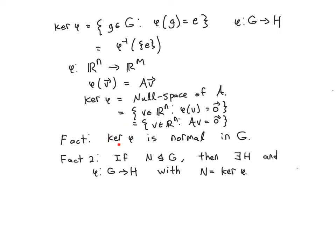Kernels of homomorphisms are normal subgroups, and they're generalizations of null spaces of matrices. A natural question to ask is: given a normal subgroup, is it the kernel of some homomorphism? The answer turns out to be yes. Given any normal subgroup N, there exists another group H and a homomorphism such that N is the kernel. So normal subgroups are kernels of homomorphisms, and kernels of homomorphisms are normal.